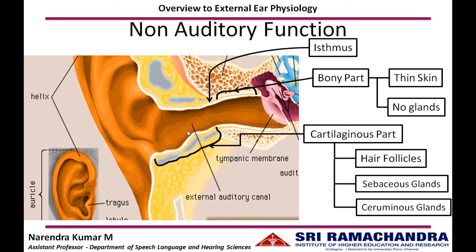The ciliary function of the hair follicles pushes the earwax towards the external auditory meatus, or the opening of the auditory canal. Once the earwax comes to the opening of the ear canal, it can be manually removed. This is the self-cleaning mechanism of the external auditory canal.